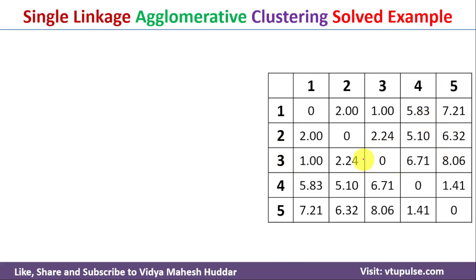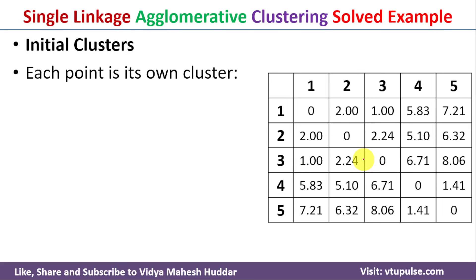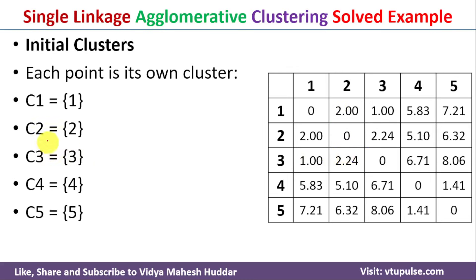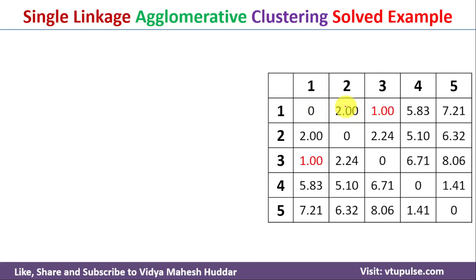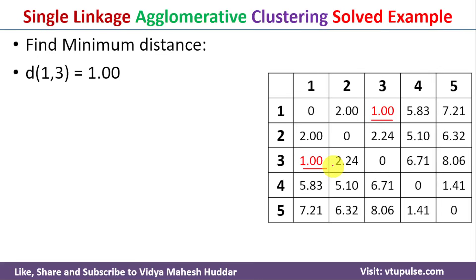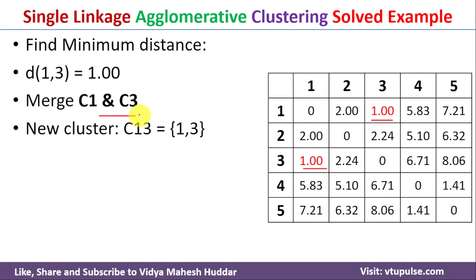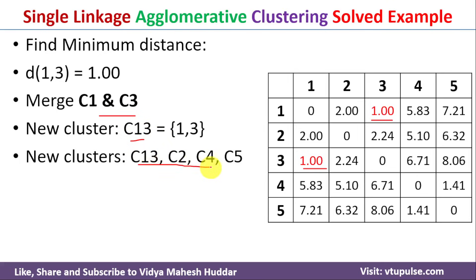Once all pairwise distances are found, we set up the initial clusters, treating each data point as its own cluster. With 5 data points, we get 5 clusters: C1, C2, C3, C4, and C5. Next, we find the minimum distance among all data points. The minimum distance is 1, which is between data points 1 and 3. So we merge clusters C1 and C3, forming new cluster C13. The updated clusters are now C13, C2, C4, and C5.